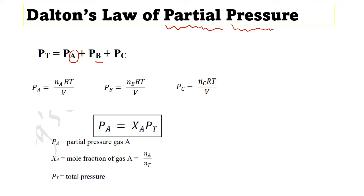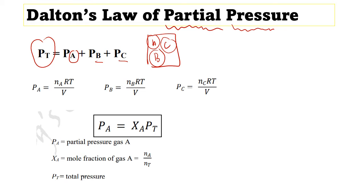We have a container with gases A, B, and C. Each gas exerts its own partial pressure. The total pressure is the sum of the partial pressures of all non-reacting gases — meaning A does not react with B, and B does not react with C. Each gas individually has its own partial pressure. This is what is meant by partial pressure according to Dalton's Law.